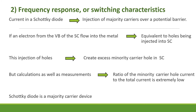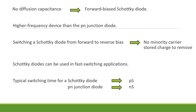So we can consider the Schottky diode as a majority carrier device. There is no diffusion capacitance associated with a forward-biased Schottky diode. The elimination of diffusion capacitance makes the Schottky diode a higher frequency device than the P-N junction diode.